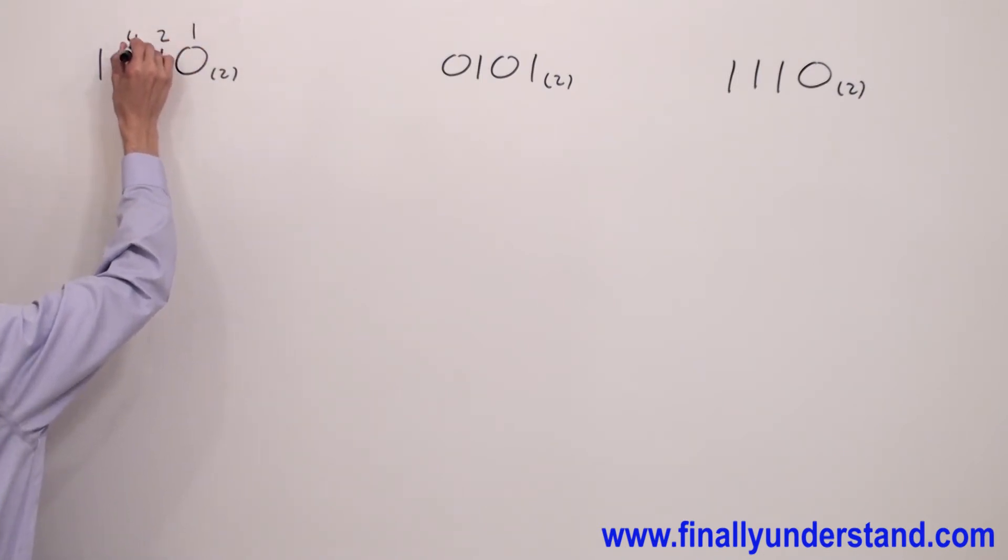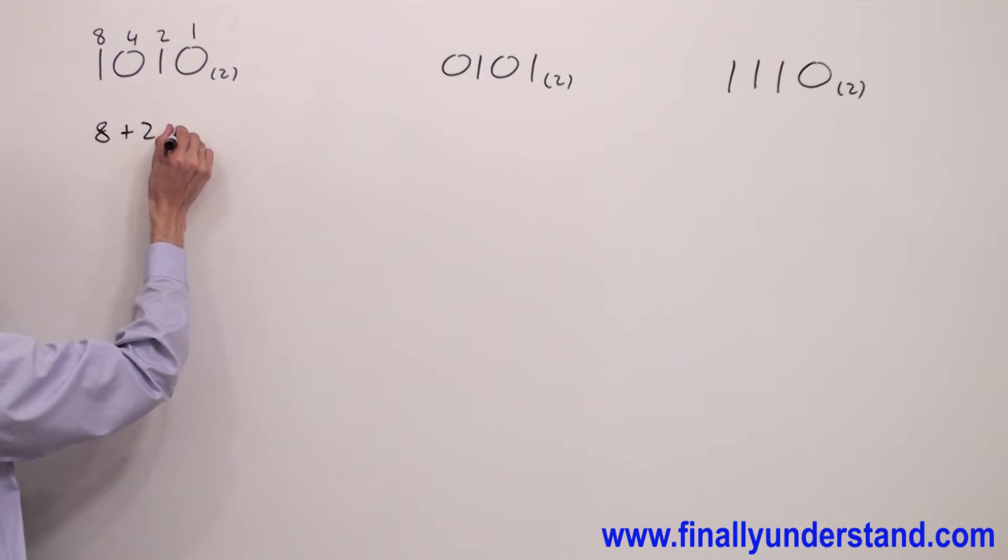One, two, four, and double of four is equal to eight. Next, add all weights which are above one. So, eight plus two. Eight plus two is equal ten.